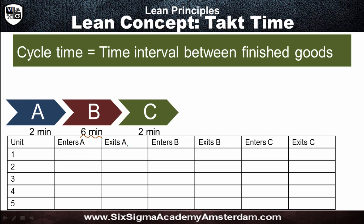Sub-process B is referred to as a bottleneck. The bottleneck needlessly slows down the rest of the process. Without it, the process would have a cycle time of two minutes. But the slowest part of the chain increases the cycle time drastically to six minutes. Typically what we do with bottlenecks is try to mitigate them as much as possible, although that's not always achievable.